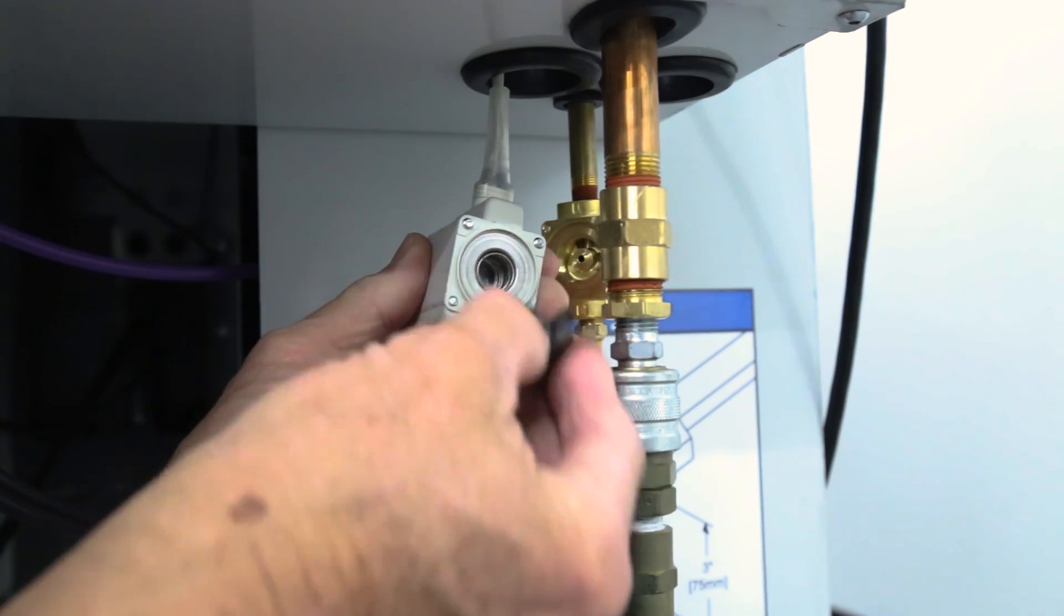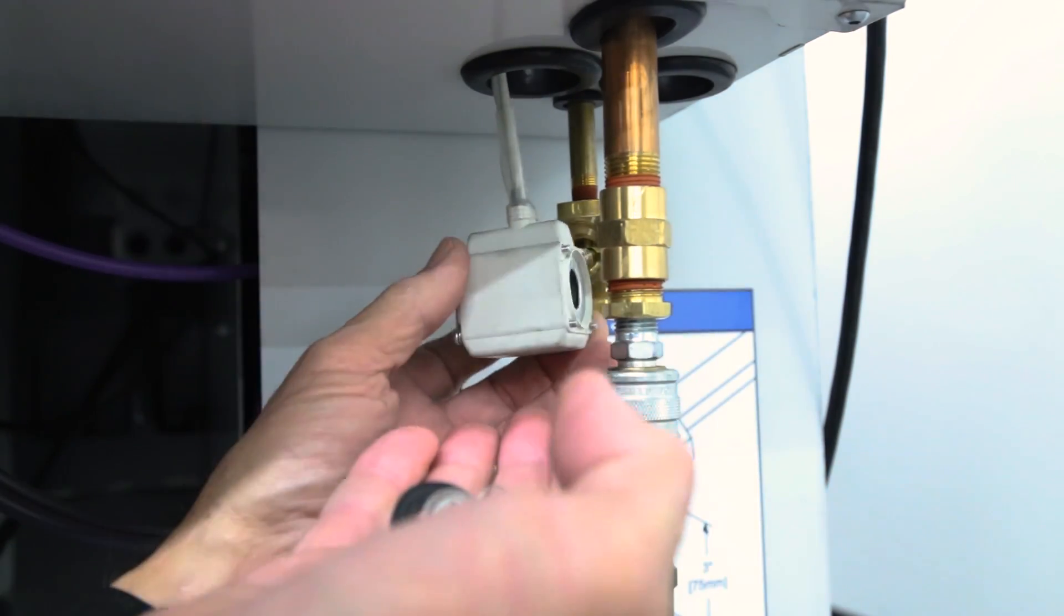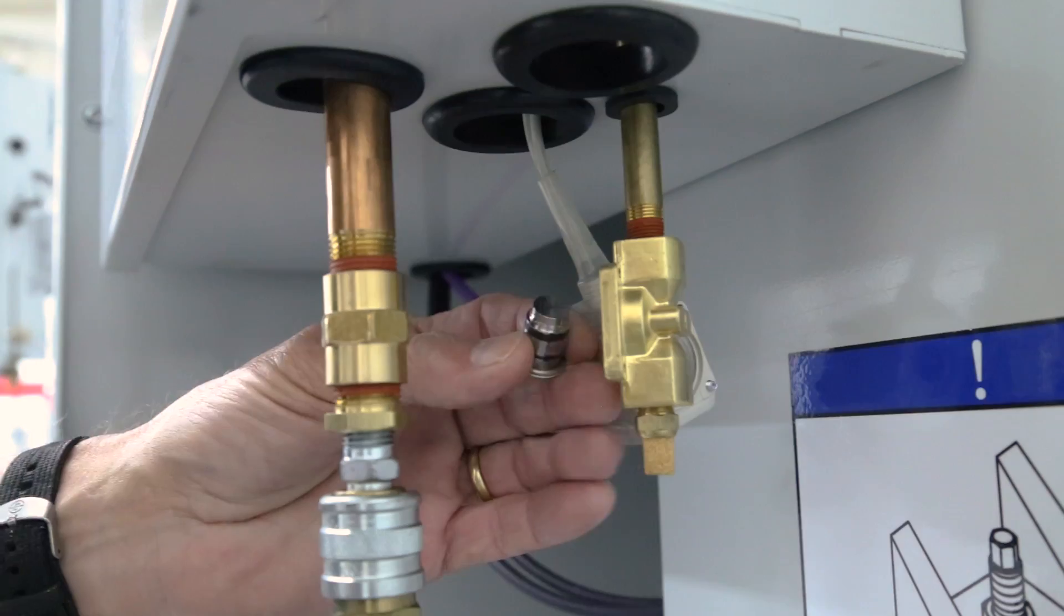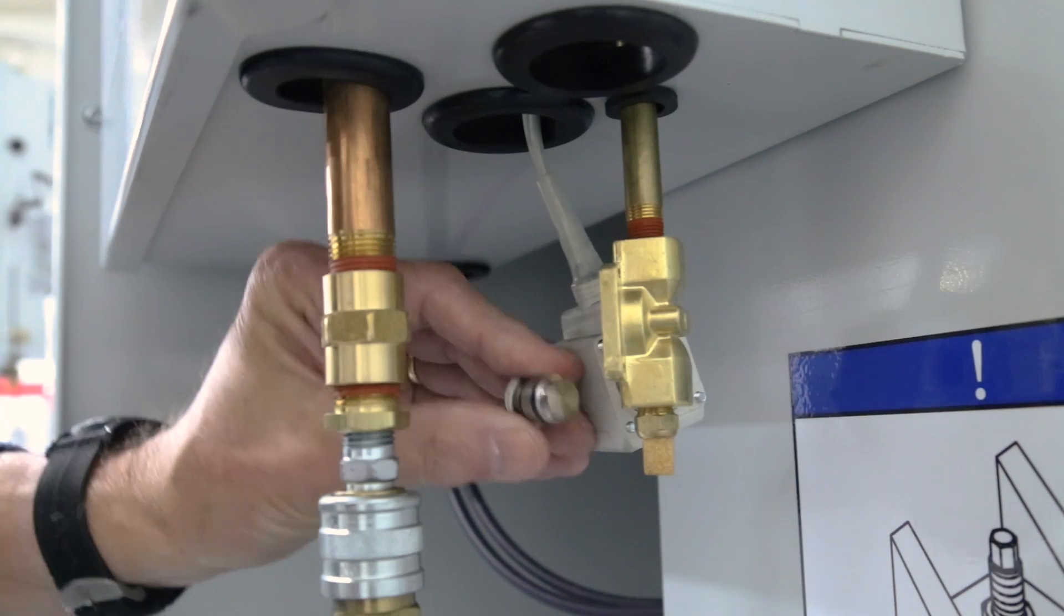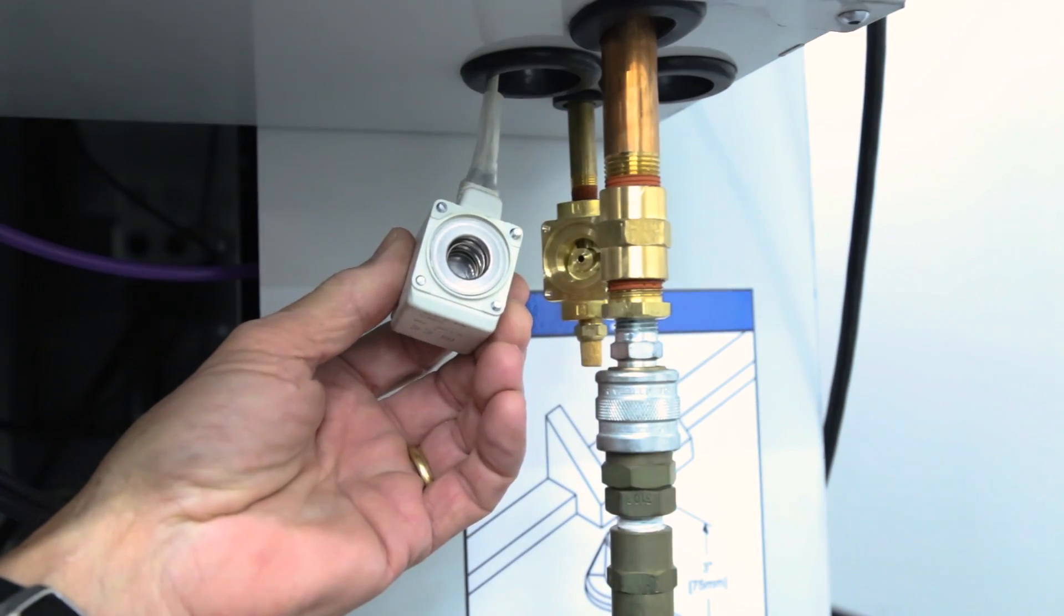Carefully remove the washer, the plunger, and the spring from the coil assembly. Crack open the air supply valve to blow out the inside of the manifold and to clear away any debris from the internal parts.